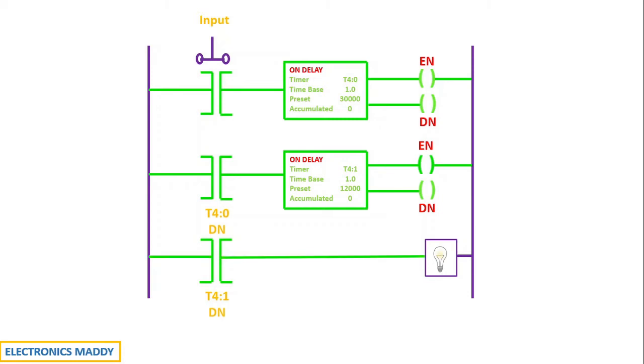Now, the rung gets energized and the current starts flowing through the load and the light starts glowing. So, what are we able to achieve in this case? We are able to achieve a 42,000 second delay by using two different timers. And this concept is called cascading.